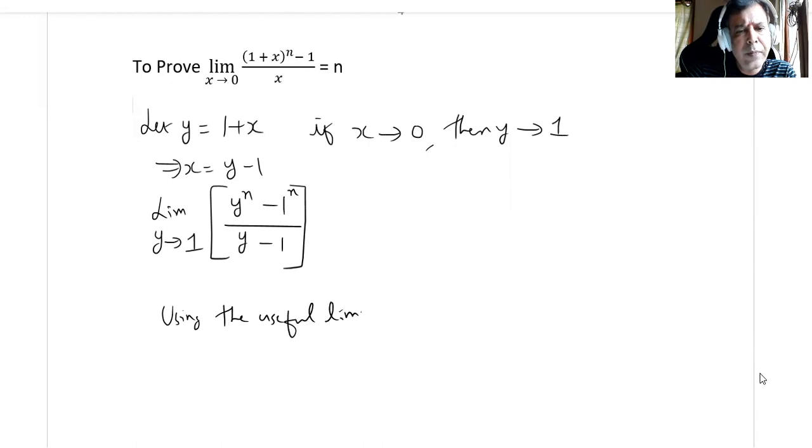The useful limit is: limit as x tends to a of (x to the power of n minus a to the power of n) divided by (x minus a) equals n times a to the power of n minus 1. We will use this because it is very similar.